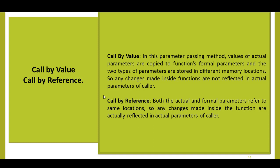In call by reference, the address of the actual parameter is passed to the function as a formal parameter. Both the actual and formal parameters refer to the same memory location. So any changes made inside the function are actually reflected in the actual parameters of the caller in case of call by reference.